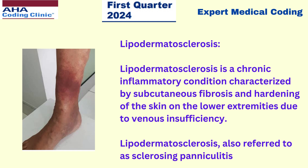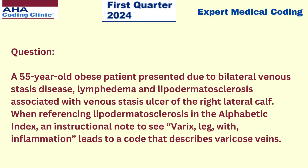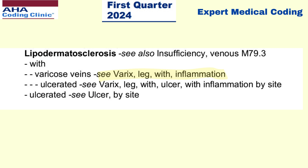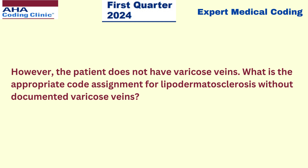Now let's see the scenario. A 55-year-old obese patient presented due to bilateral venous stasis disease, lymphedema, and lipodermatosclerosis associated with venous stasis ulcer of the right lateral calf. When referencing lipodermatosclerosis in the alphabetical index, an instructional note — 'see varicose leg with inflammation' — leads to a code that describes varicose veins. However, the patient does not have varicose veins. So what is the appropriate code assignment for lipodermatosclerosis without documented varicose veins?